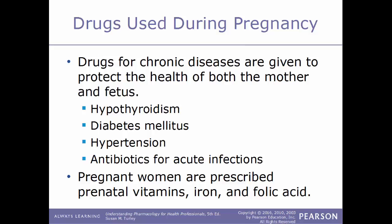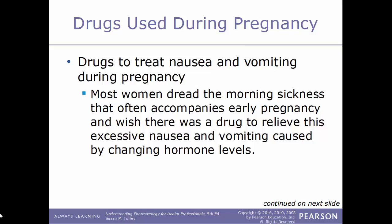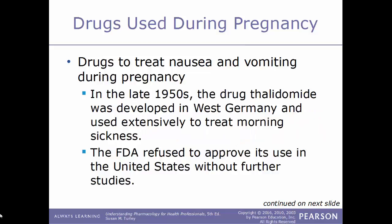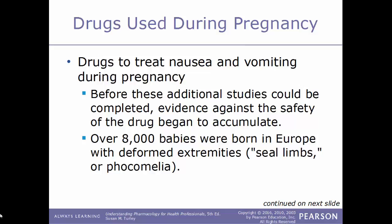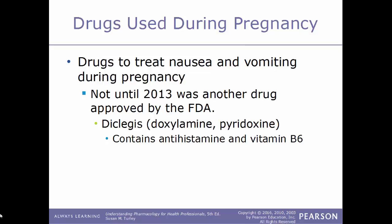Regarding drugs used to treat nausea and vomiting during pregnancy — most women dread the morning sickness that often accompanies early pregnancy. In the late 1950s, the drug thalidomide was developed in West Germany and used extensively to treat morning sickness, but the FDA refused to approve its use in the United States. Before additional studies could be completed, evidence against its safety accumulated, and over 8,000 babies were born in Europe with deformed extremities resembling seal limbs. Not until 2013 was another drug approved by the FDA — Diclegis, a combination of doxylamine and pyridoxine, which contains both an antihistamine and vitamin B6.